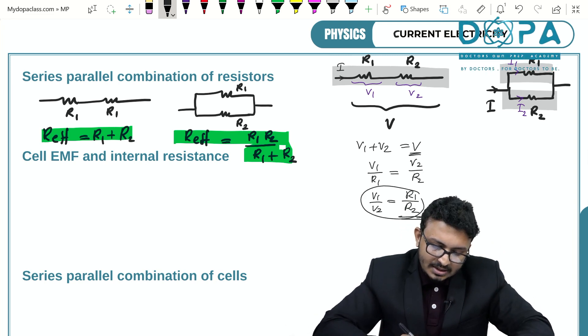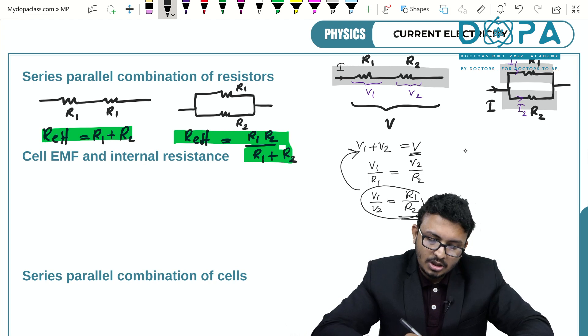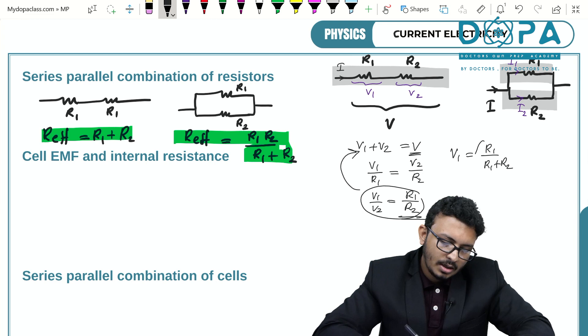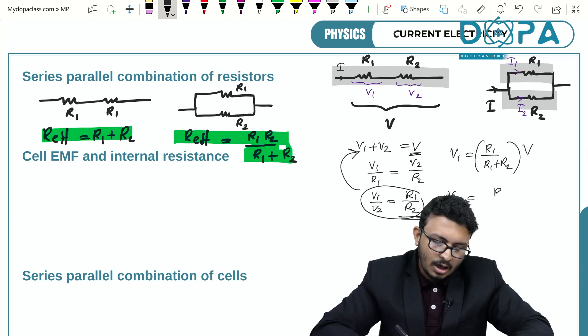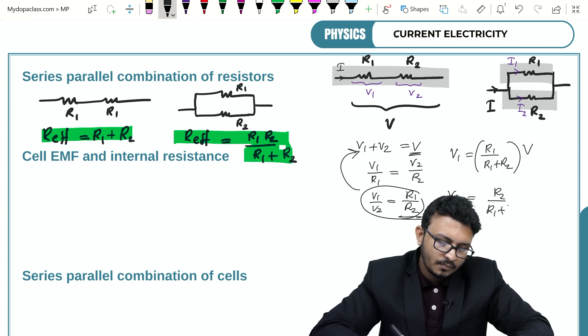Therefore, if you substitute this condition onto this equation, you get V1 is equal to R1 by R1 plus R2 into the total voltage V, and V2 is equal to R2 by R1 plus R2 into the total voltage V.